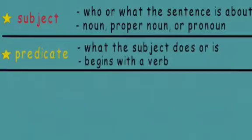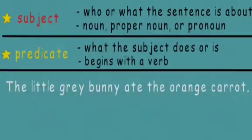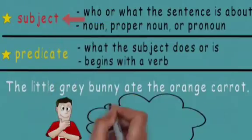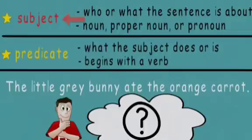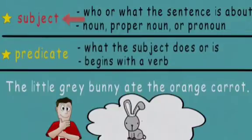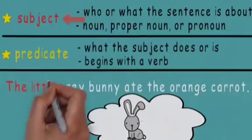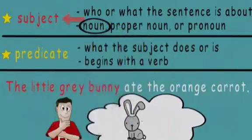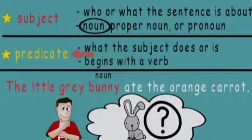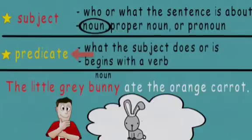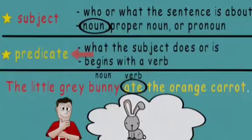Let's practice and find the subject and predicate in some complete sentences. 'The little grey bunny ate the orange carrot.' First, let's find the subject — who or what is the sentence about? I get a picture of a little grey bunny, so 'the little grey bunny' is the subject, and bunny is a noun. The predicate is 'ate the orange carrot,' and ate is a verb, so the predicate begins with a verb.